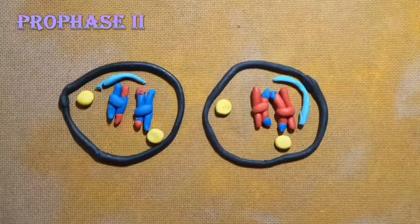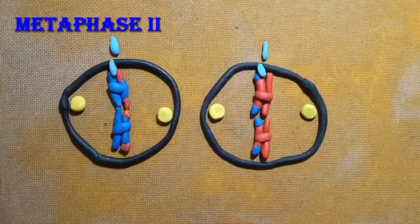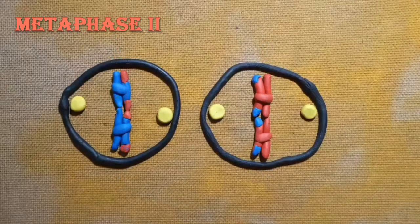Nuclear envelopes disappear. Centrosomes move to the opposite side. Chromosomes align in the center called metaphase plate. Spindle fibers get attached to the centromeres.